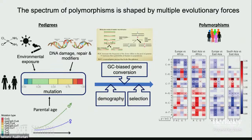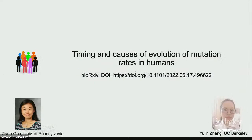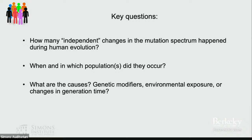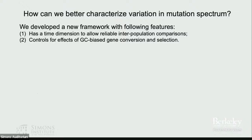This work was jointly led with Ziwe Gao at the University of Pennsylvania and graduate student Yulin Zhang. The question we asked is: how many changes have occurred in the human mutation spectrum, when and in which populations did these occur, and what are some of the causes? To understand this, we developed a new framework adding a time dimension to understand when differences occur across populations, and we control for effects of selection and biased gene conversion.